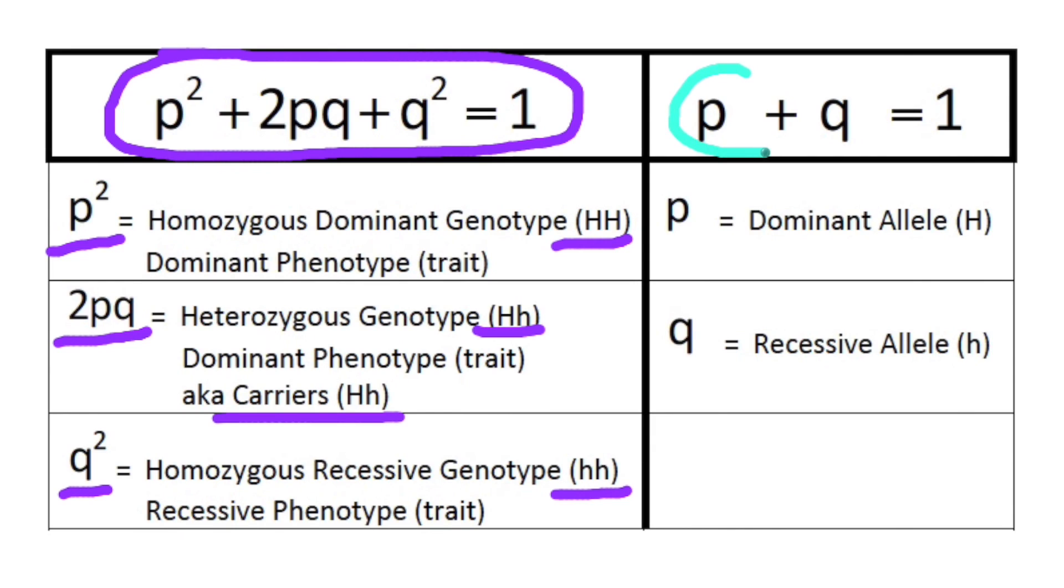Our second equation is p + q = 1. The p represents the dominant allele, which is one part of a gene, and q represents the recessive allele, which is one part of a gene. And yes, they will be specific to allele if they are asking for or giving us the frequencies of alleles. They'll actually mention allele.